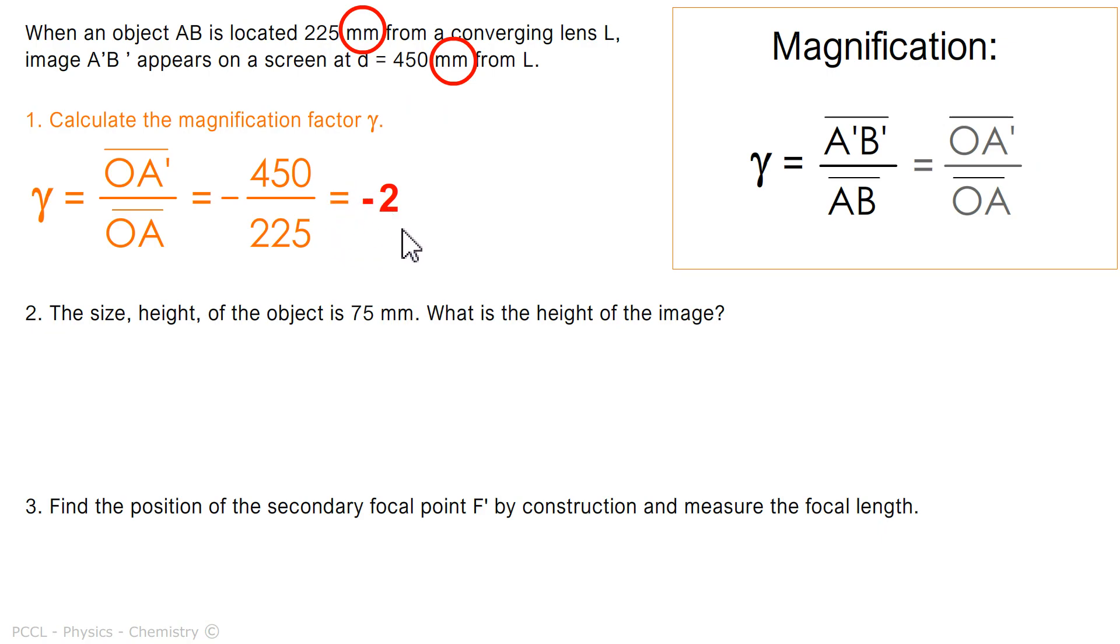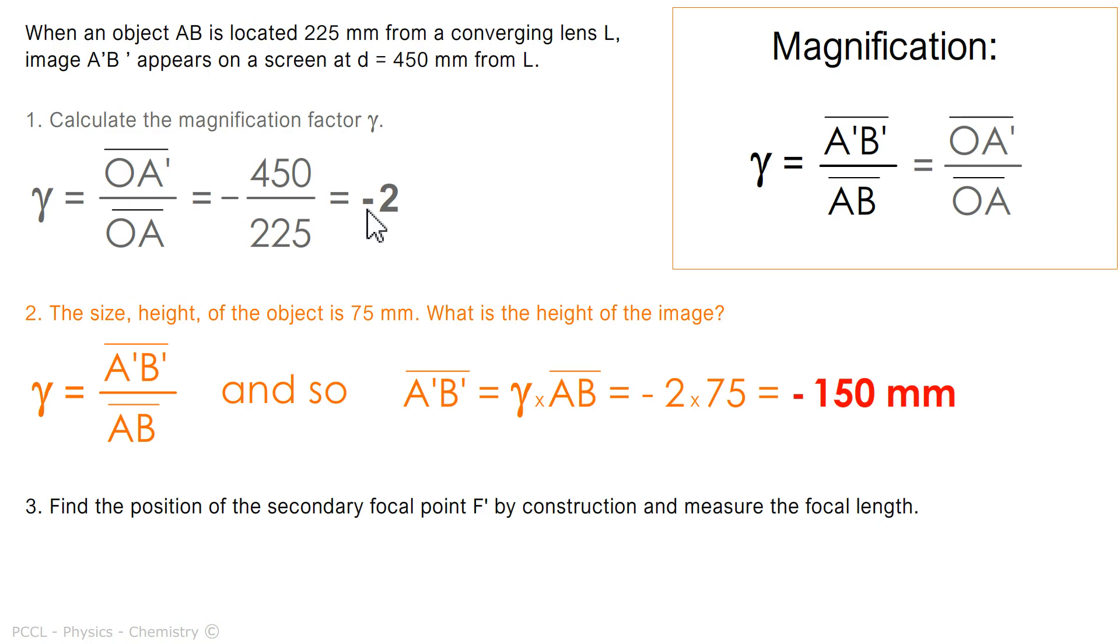I know that A' and A are not on the same side of the lens. We saw that in the constructions, and so I'm going to put the minus sign here and find that the magnification is negative 2. If I am given the object size, now I can find the image size by doing gamma times AB and I find minus 150 mm.